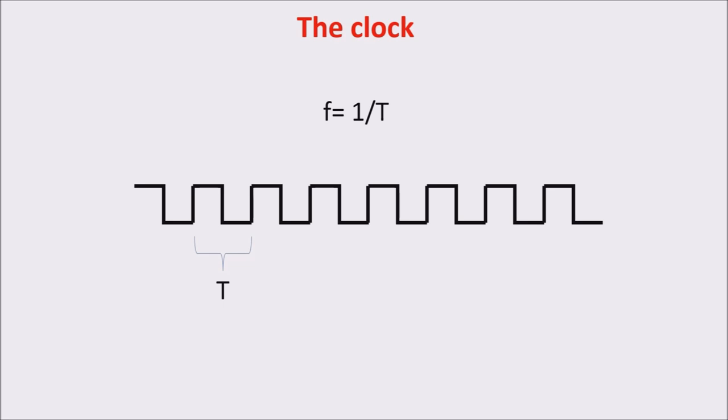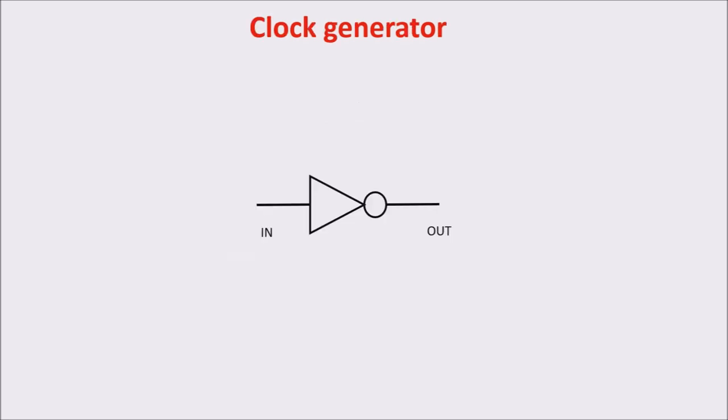In sequential circuits, an output of a block is an input of another block, and the operations have to be performed in a certain order to make sense. For this reason, we need a time reference. Let's see how we can design a simple clock generator.